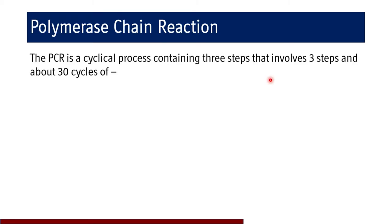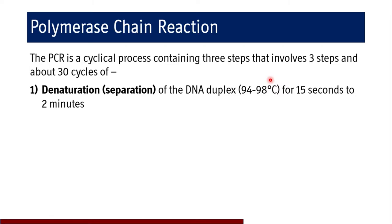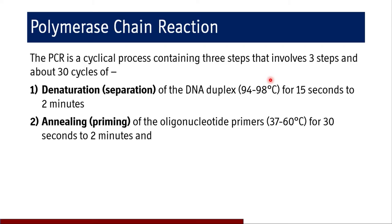PCR is a cyclical process containing three steps of about 30 cycles. Denaturation or the separation of the DNA duplex is the first step. It occurs at 94 to 96 degrees centigrade for 15 seconds to two minutes. In the next step, the annealing or priming step, the primers bind to the complementary sequences at 37 to 60 degrees centigrade for 30 seconds to two minutes.